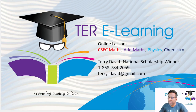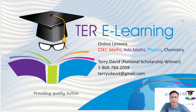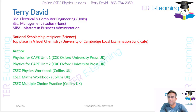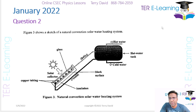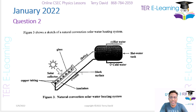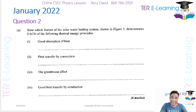Hi guys, it's Terry here again and I'm working on solutions for the January 2022 CSEC Chemistry Paper 2. If you like my channel please hit like and also subscribe. In question two it shows the sketch of a natural convection solar water heating system. By the way, this is a repeat question — it came up in a past paper already.